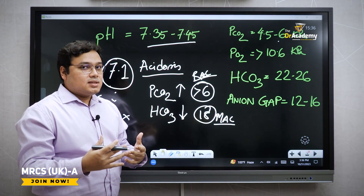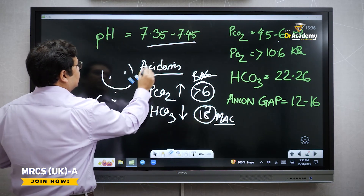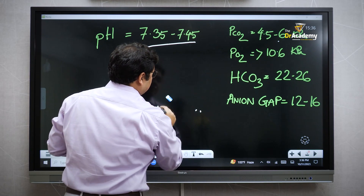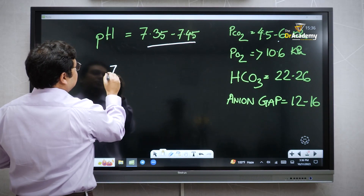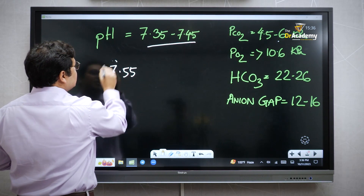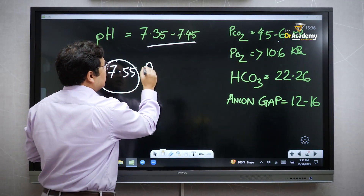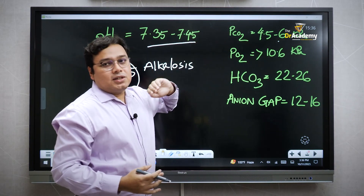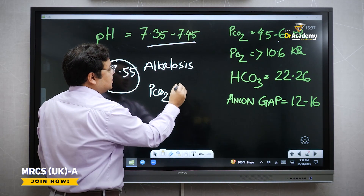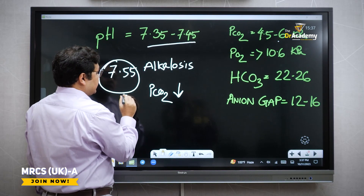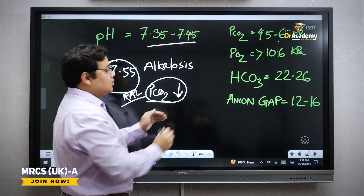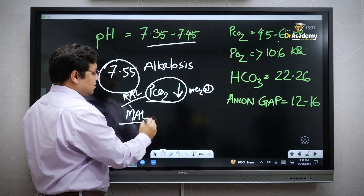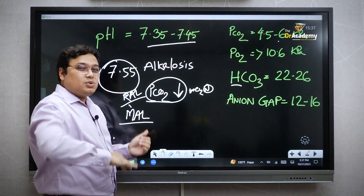Now let's talk about alkalosis. If pH is more than 7.45 — for example 7.55 — that is alkalosis. It could be either metabolic or respiratory. For respiratory alkalosis, CO2 level needs to go down, and bicarbonate level will be normal. For metabolic alkalosis, the bicarbonate level needs to go up. Those are the basics.